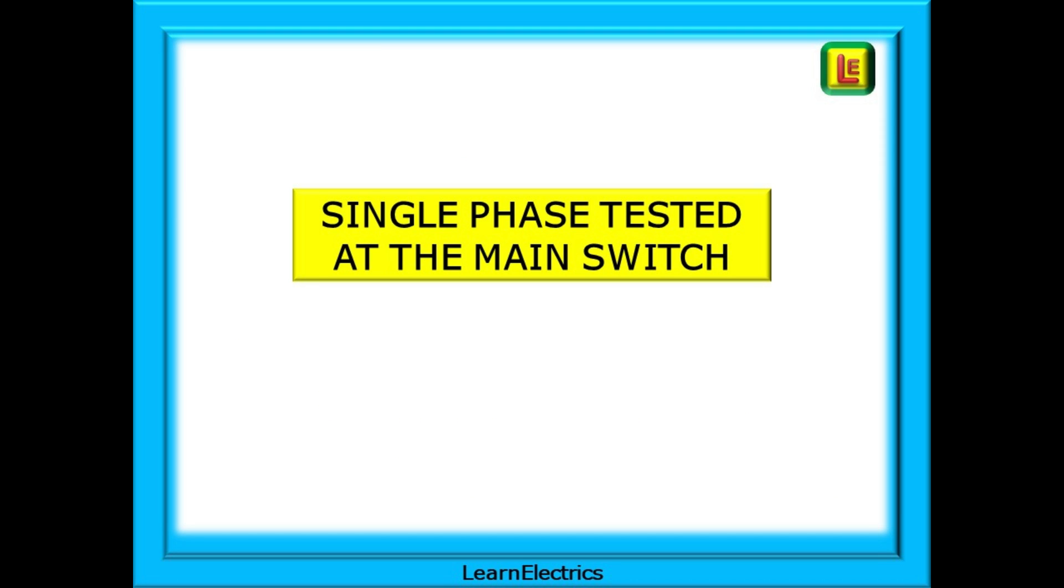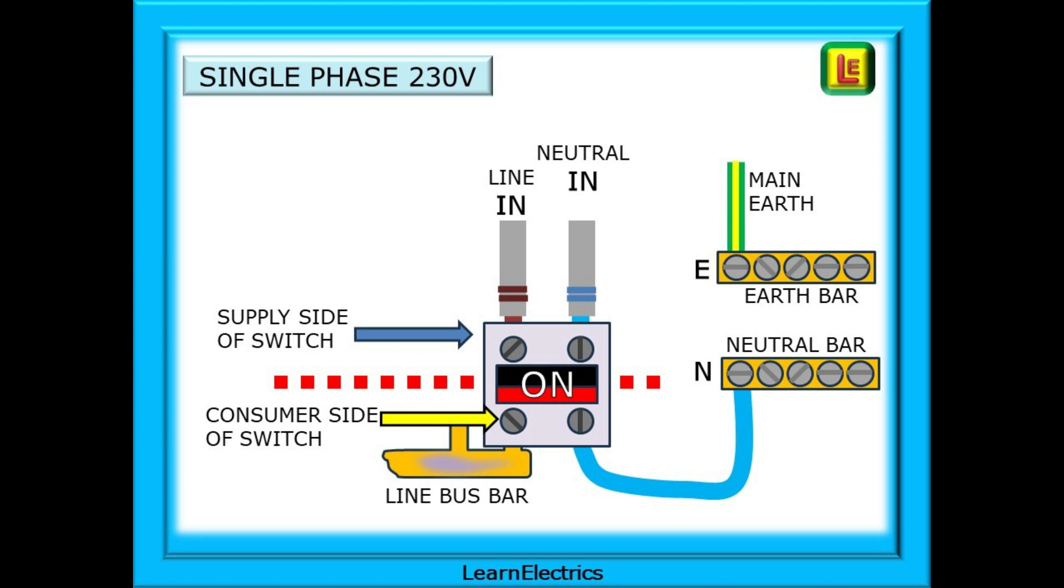Let's look at these, and we can begin with a single-phase consumer unit that is to be voltage tested at the main switch. This is the main switch, and in most domestic consumer units, the live feed, the incoming feed or supply, will enter the top of the switch. This part of the switch, the top two terminals, will always be live. The bottom two terminals are on the consumer side of the switch and these are switched on or off by the switch. One terminal is connected to the bus bar for the circuit breakers, and the other terminal is connected to the neutral bar. The main earth would go directly to the earth bar without being switched.